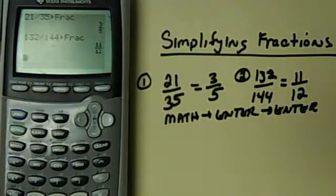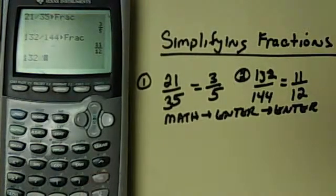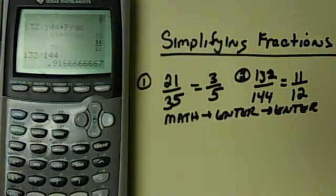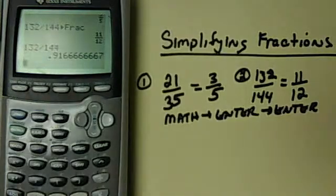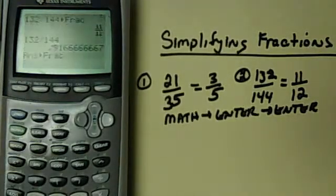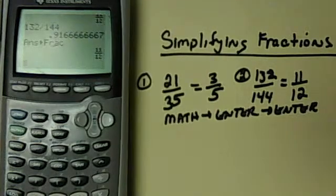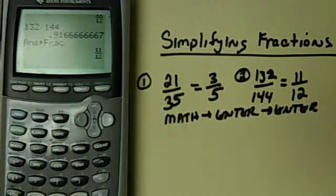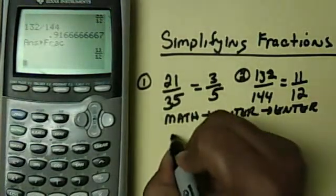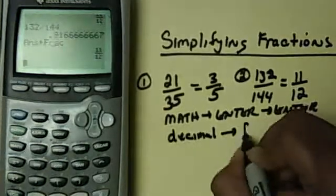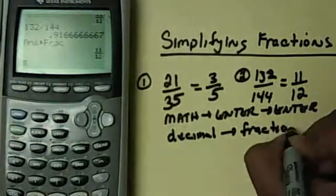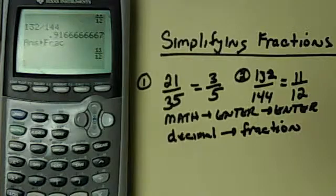Now, let's say you forget to hit Math, Enter, Enter right away. So you can still do 132 divided by 144, and you say, oh my, I have a decimal. And the question doesn't want a decimal answer. Right from there, you can just hit Math, Enter, Enter, and it will give you the answer. So how do you change a decimal to a fraction? You change a decimal to a fraction by that process also by hitting Math, Enter, Enter.